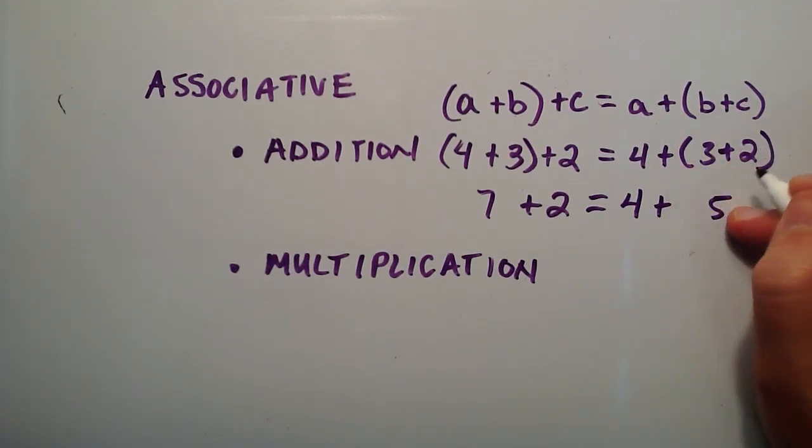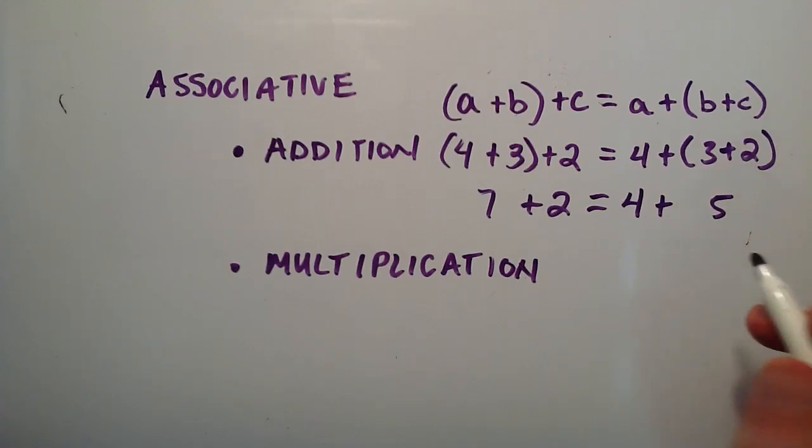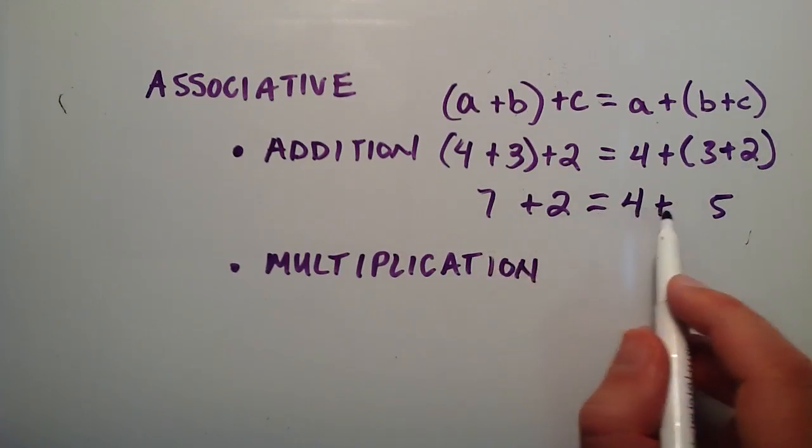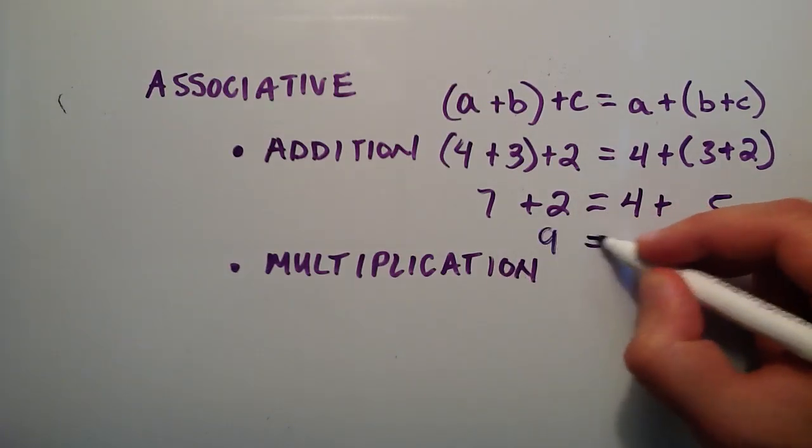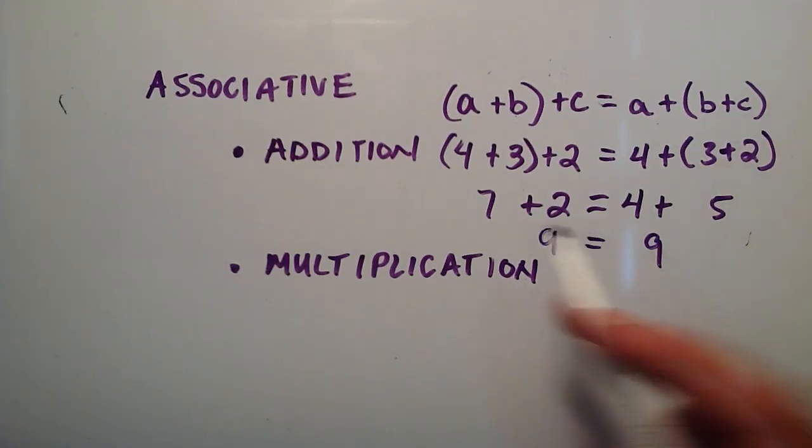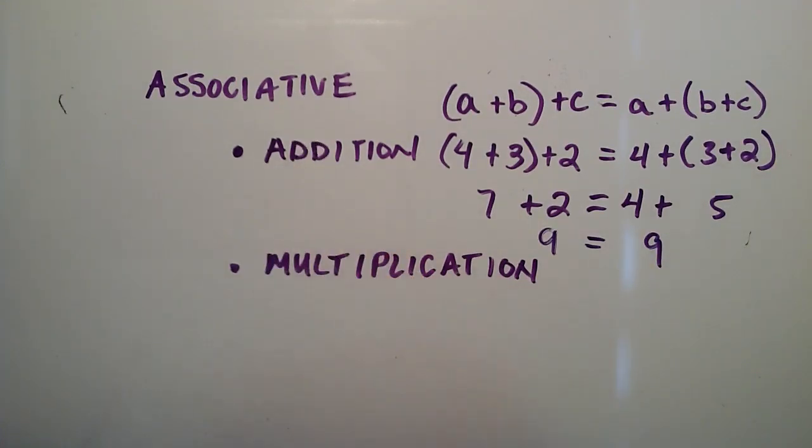This is saying that 7 plus 2 should equal 4 plus 5, and they both equal 9. That demonstrates the associative property of addition.